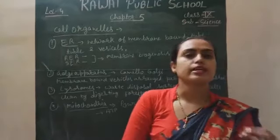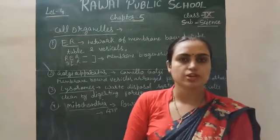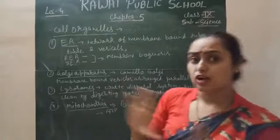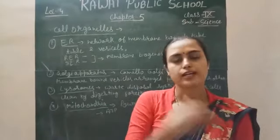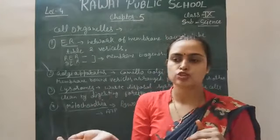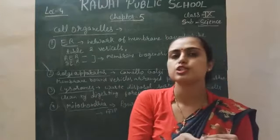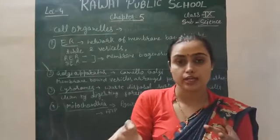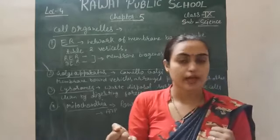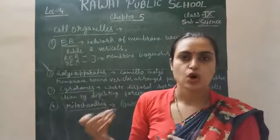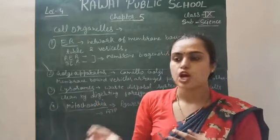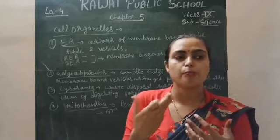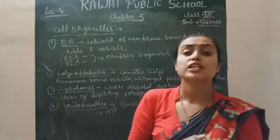Today we will discuss the various cell organelles — how they are formed, what is their function, and where they are present. Cell organelles are of two types: membrane-bounded organelles and non-membrane organelles. The membrane-bounded organelles are present in eukaryotic cells — all the organelles are membrane bounded. But in the case of prokaryotic cells, membrane-bounded organelles are absent; only non-membrane-bounded organelles are present. There is only one organelle which has no membrane — the ribosome.